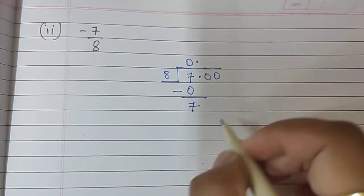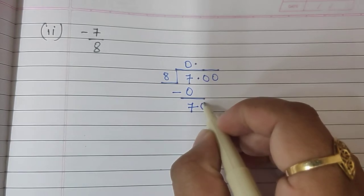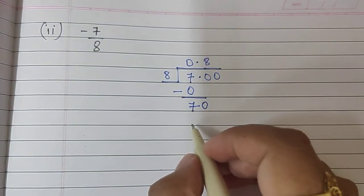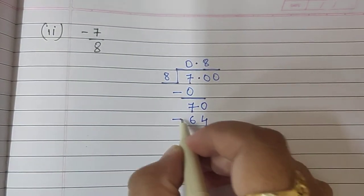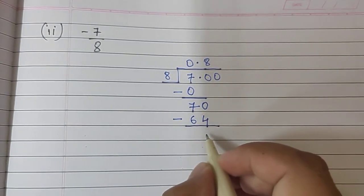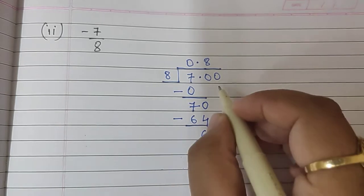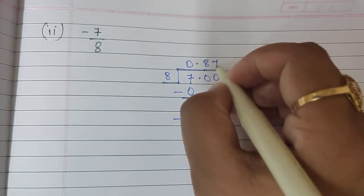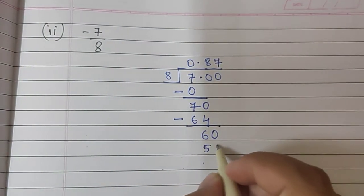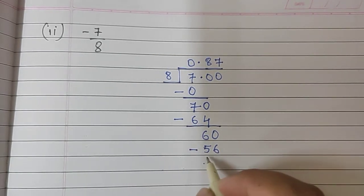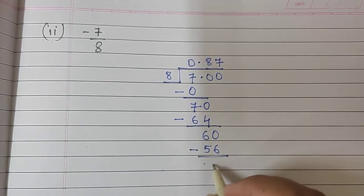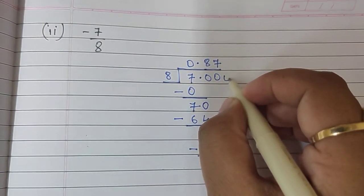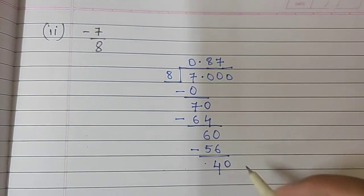Now, we can put this decimal sign on top and bring the 0 down. So, this becomes 70, 8, 8's are 64 minus sign. 70 minus 64 will be 6. Again, we can bring this 0 down now. 60, 8, 7's are 56 minus, 60 minus 56 will give me answer 4. Here, we can add after decimal, we can add how many zeros we want. So, I will add another 0 and bring that down.